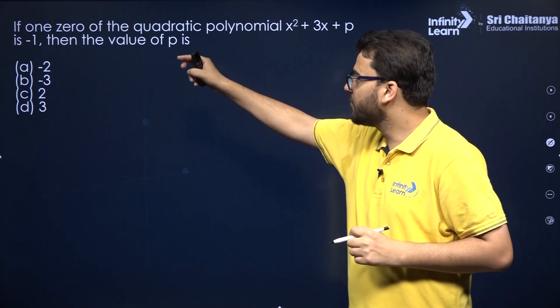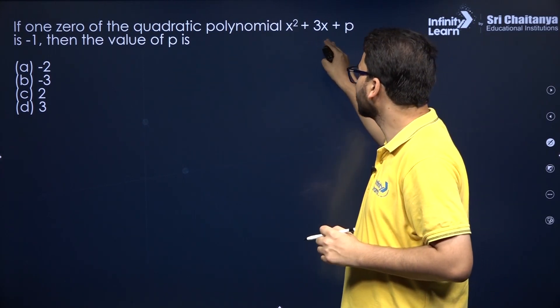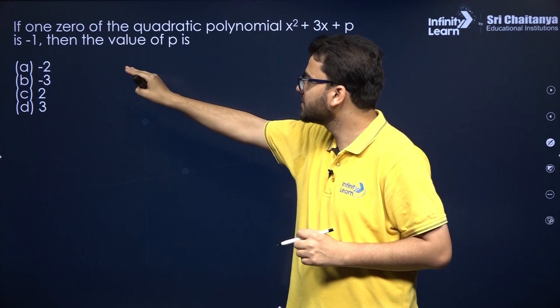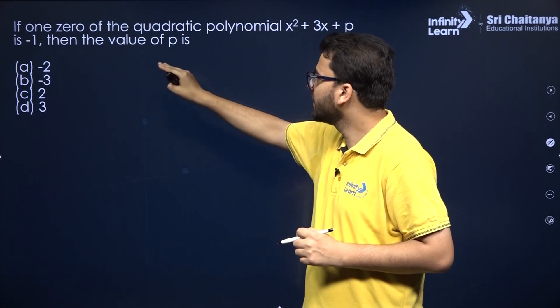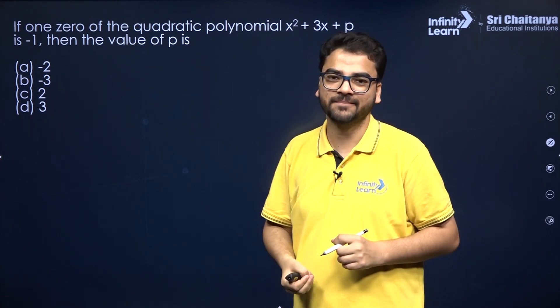If one zero of the quadratic polynomial x² + 3x + p is minus 1, then you have to find the value of p.